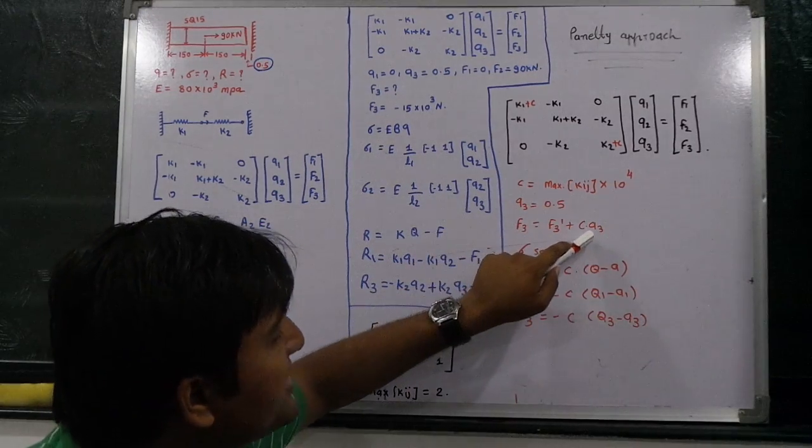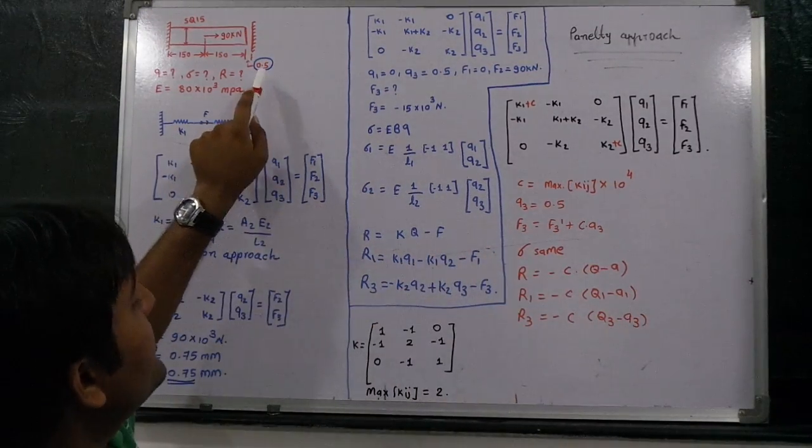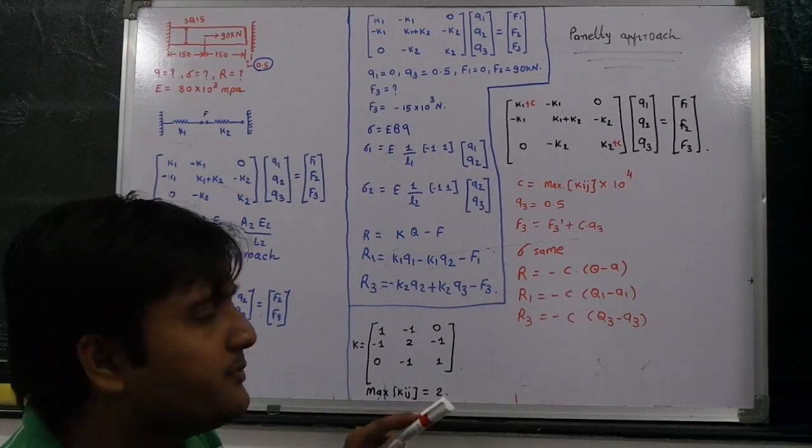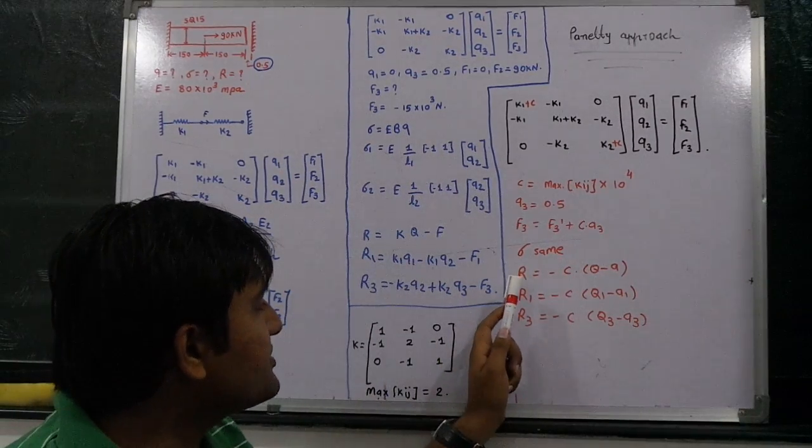But as there is no load acting on the fixed support right now, F3_dash equals 0. So we take F3 is equal to C into A3, where A3 is equal to 0.5, the gap at the node.